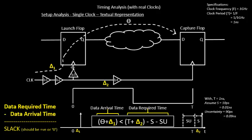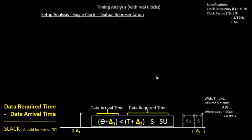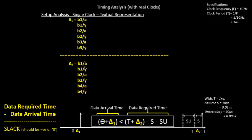Now we have the launch clock network delay Delta 1 and the capture clock network delay Delta 2 in textual format. Let's convert the full timing equation. Delta 1 is B1A, B1Y, and so on; Delta 2 is B1, B2, and B4 terms. We also have the combinational delay theta, the clock period T, setup time, and setup uncertainty. When you add theta plus Delta 1, this section becomes your data arrival time.